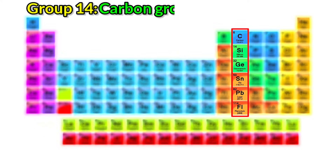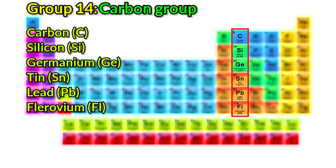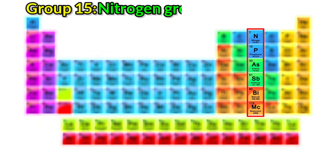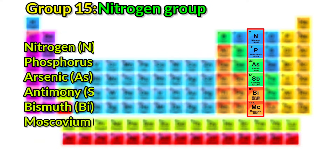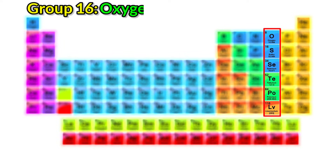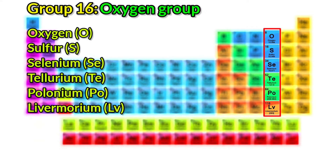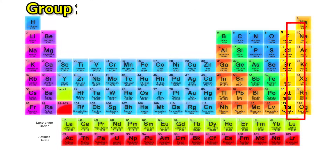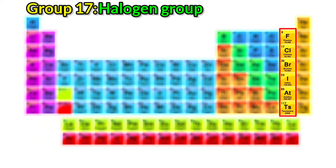Group 13: Boron group. The elements included in the boron group are boron, aluminum, gallium, indium, thallium, and nihonium. Group 14: Carbon group. The elements included in the carbon group are carbon, silicon, germanium, tin, lead, and fluorovium. Group 15: Nitrogen group. The elements included in the nitrogen group are nitrogen, phosphorus, arsenic, antimony, bismuth, and muscovium.